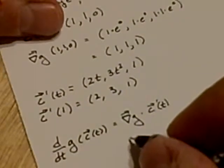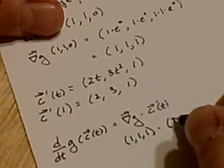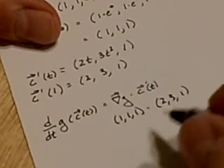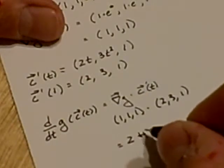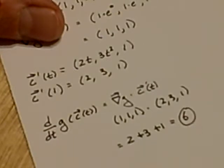So this is 1, 1, 1 dotted with 2, 3, 1, which equals 2 plus 3 plus 1, or 6.